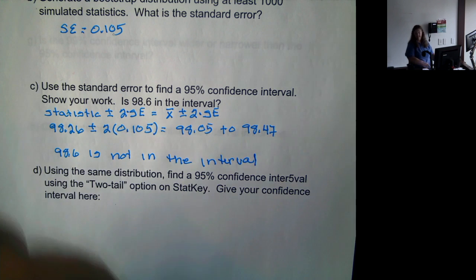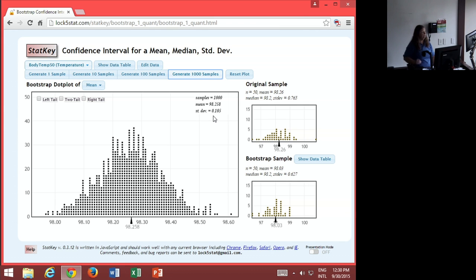Now we're going to go on StatKey and do the same thing. We're going to click on 2 tail, and it automatically will come up with 95%. And we look here and we have 98.05 to 98.463, which is very close to what we got by hand.